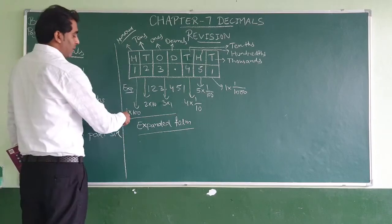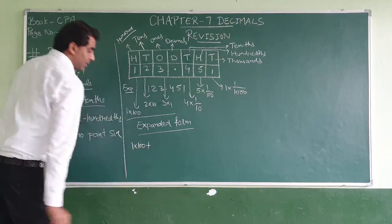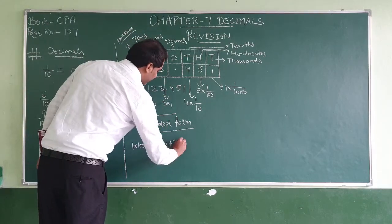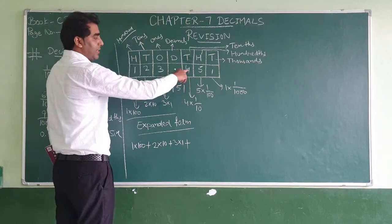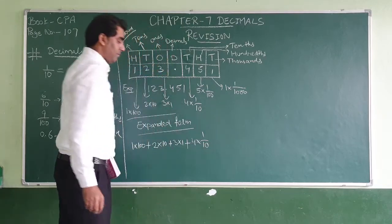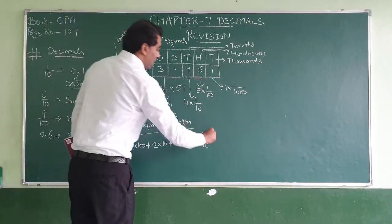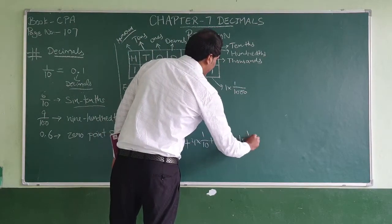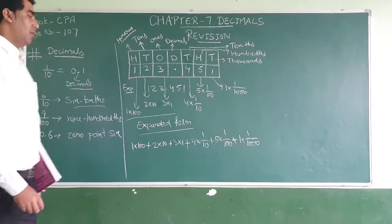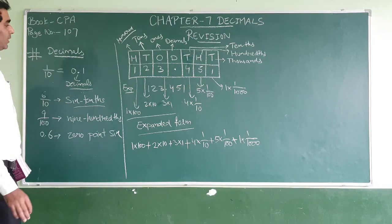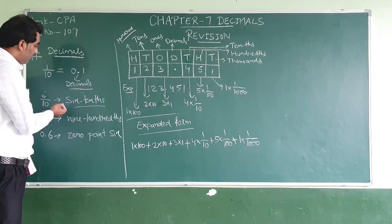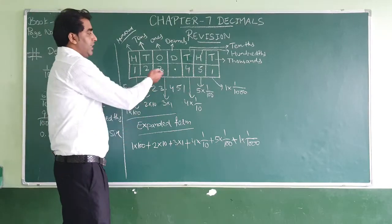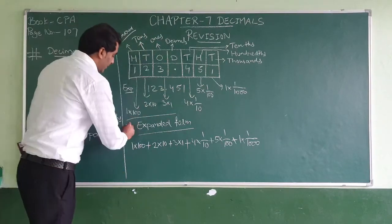So the expanded form is written as: 1 × 100 + 2 × 10 + 3 × 1 + 4 × 1/10 + 5 × 1/100 + 1 × 1/1000. This is the expanded form. So we have now covered: decimals basics, decimal fractions, the place value table, and the expanded form.